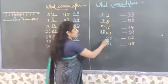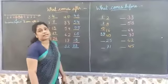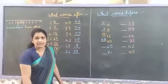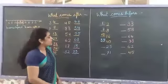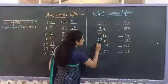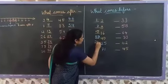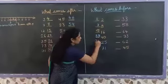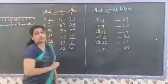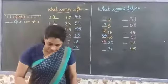And next — which number is this? 25. 25 ke pehle kya hota hai? 2, 4 — that is 24. 24 comes before 25.